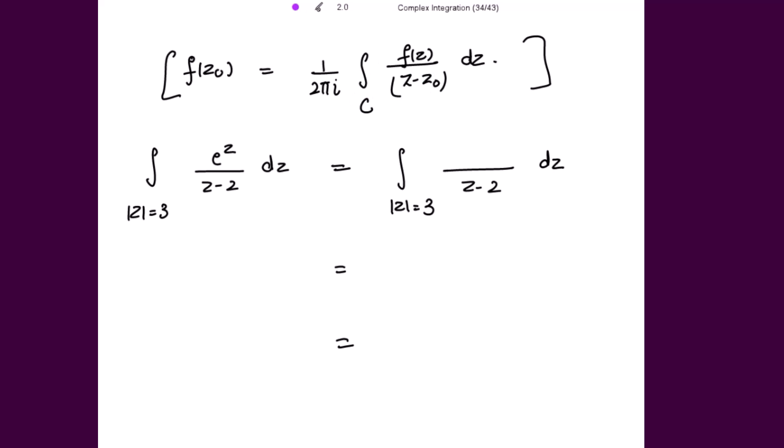So from here we calculate the integral of e^z over z minus 2 dz. So e^z is your function f(z) over z minus 2, and if you relate this to the formula, this is nothing but your right side.